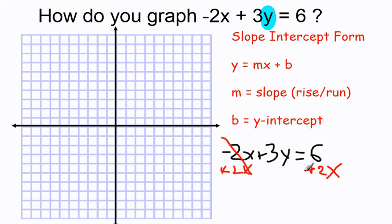So it's 6 plus 2x, but it's more beneficial to think of it as 2x plus 6. Because that cancels, I get 3y equals 2x plus 6.